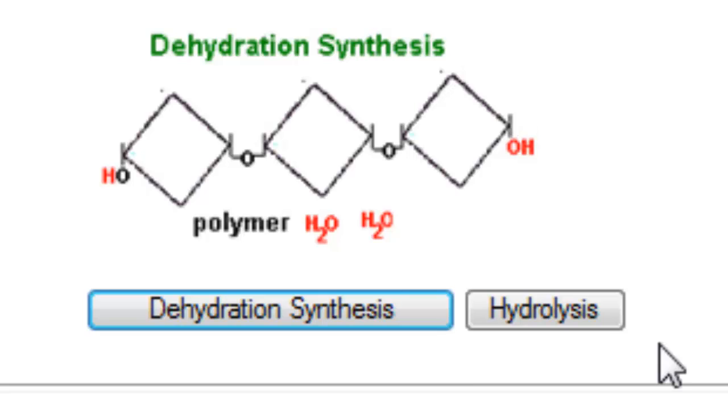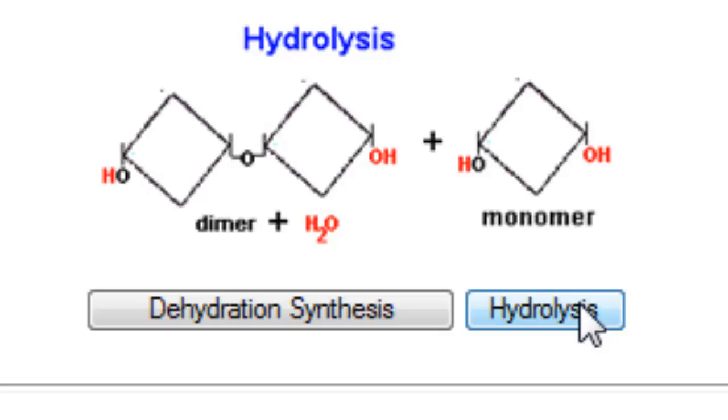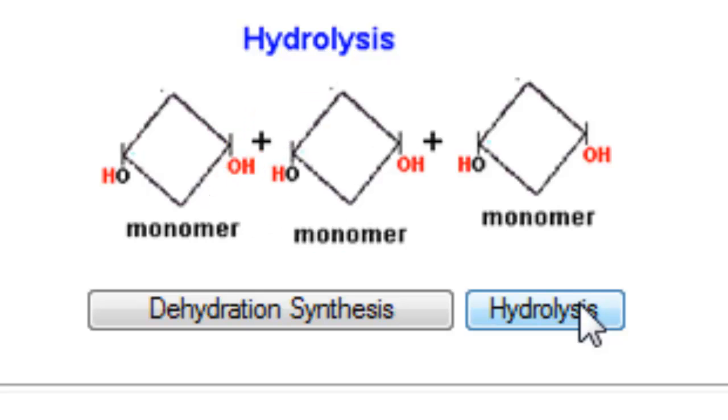To do the opposite of that, we would do hydrolysis. So we would add the water, give the water back to those molecules so they can separate from each other. So here's water. We gave one water back and we separated. And we gave another water back. And now you're left with monomers again.